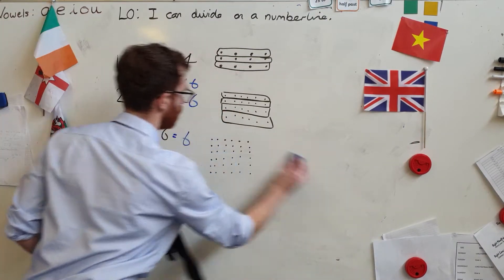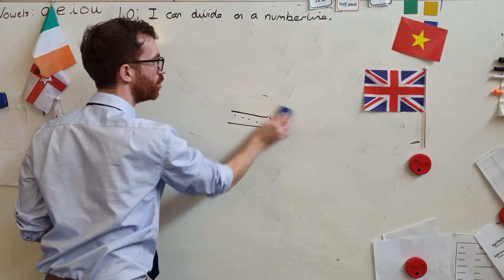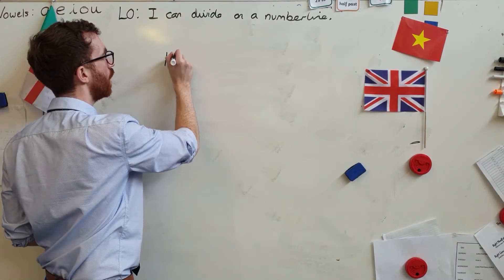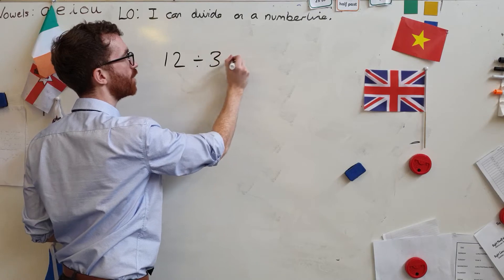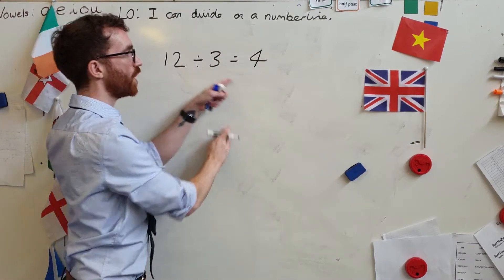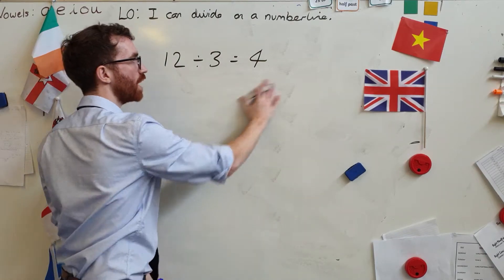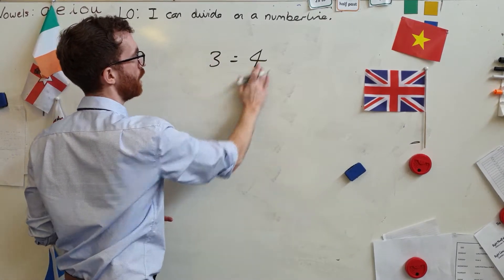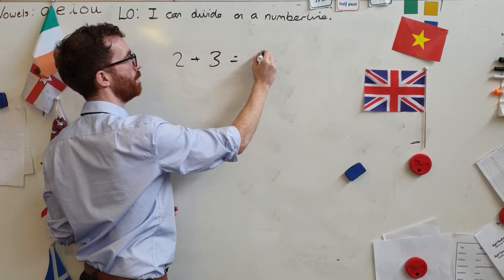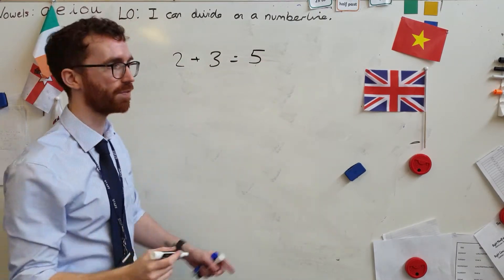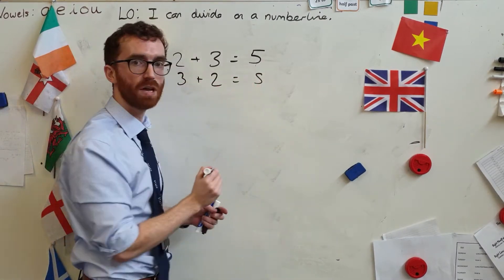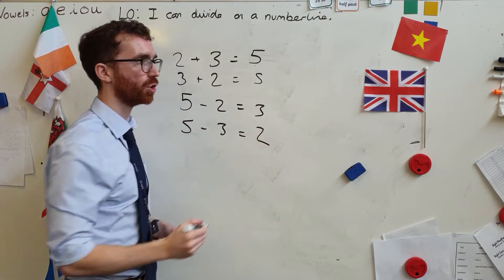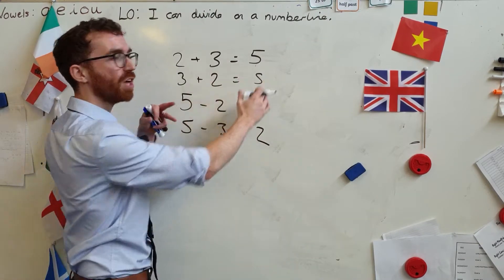We're going to have a look at that inverse thing. Inverse is when I invert numbers — I swap the numbers around. I've got to keep the same numbers, but I can swap them around and it still makes the same answer. So let's say two plus three equals five. I know that three plus two equals five, and if I swap it around: five take away two is three, five take away three is two. This is showing the inverse, where I take the numbers and swap them all around.